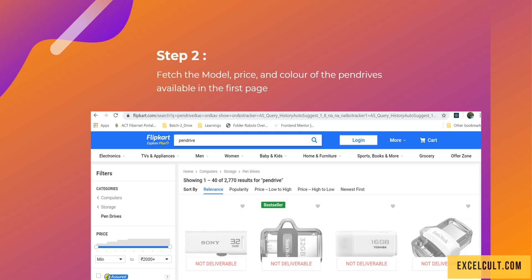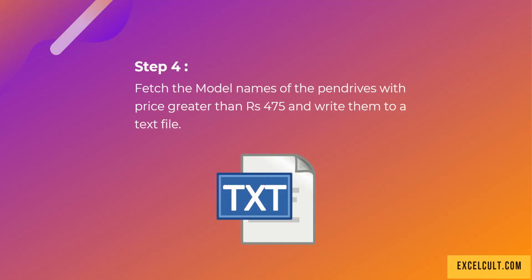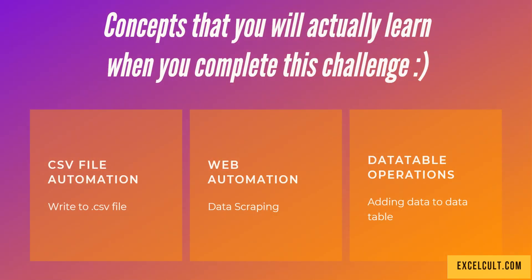Once that is done, as step 3 we have to log those details into a CSV file. The final step is to fetch the model names of the pen drives with a price greater than rupees 475 and write them back to a text file.